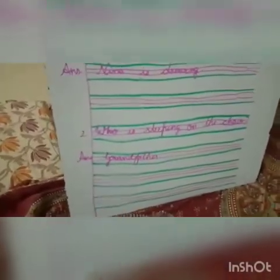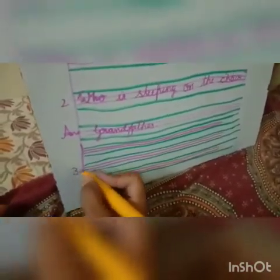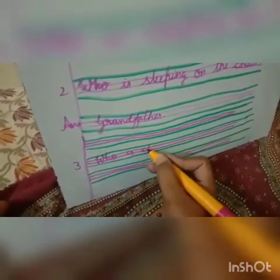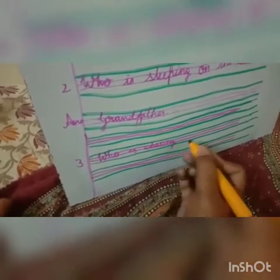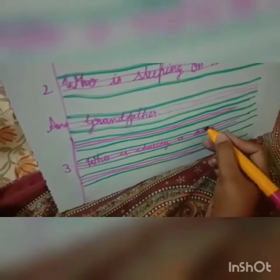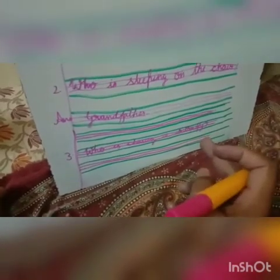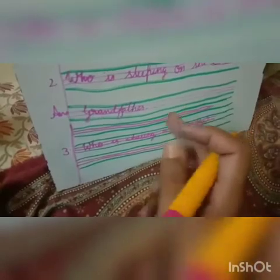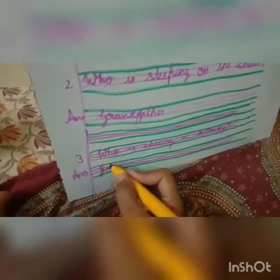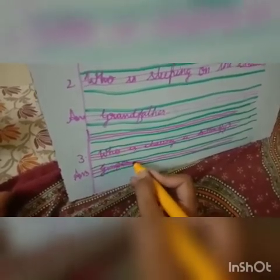Skip one line. Now number 3: Who is chasing a butterfly? W-H-O is C-H-A-S-I-N-G a B-U-T-T-E-R-F-L-Y? Question mark. In the story, who was chasing? Not Pradeep, not Rajesh, not Grandfather — it was a cat, and the cat's name was Ginger. So we will write Ginger. G-I-N-G-E-R. Full stop.